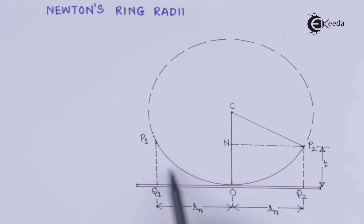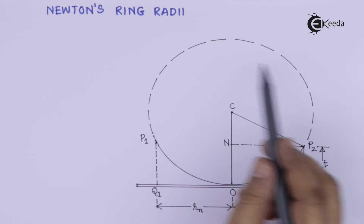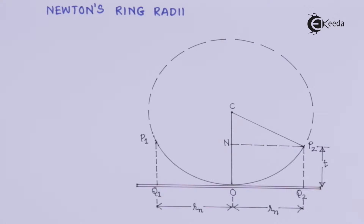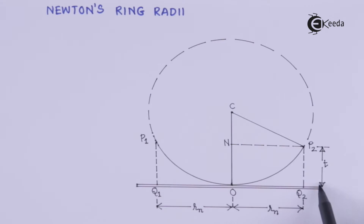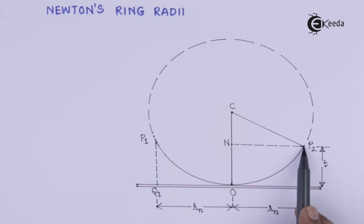Here is the plano-convex lens, and this plano-convex lens is a part of a bigger circle. The radius of curvature of this plano-convex lens used to observe Newton's rings is given by CO, which we call R. This is the plate in contact with the plano-convex lens at point O, and we are considering the interference taking place at point T. The resultant radius of the ring at point P2, where the thickness of the plano-convex lens is T, corresponds to a ring of radius Rn, which can be either a bright ring or a dark ring.